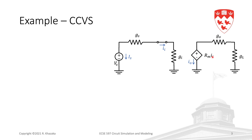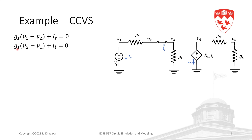Let us write the KCL equations by hand first and then compare with the matrix equations. We define nodes one, two, three, four, and five. At node one: gs(v1−v2) plus the current leaving through the voltage source, is. At node two: gs(v2−v1) plus the current leaving through the short circuit, which is ii.